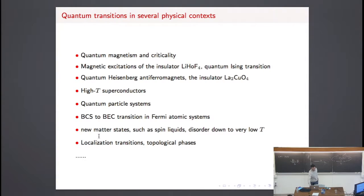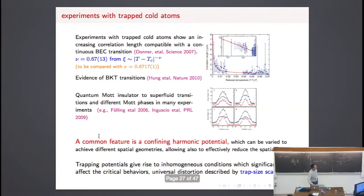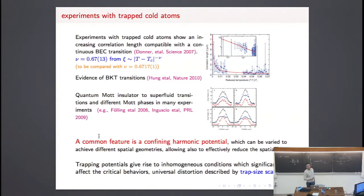This theory can be applied to many different systems which are very interesting. Just to give you some flavor of the experimental results: this is a finite-temperature transition with cold atoms, but this one is in the limit of zero temperature, where they observe the Mott phases. I will now show you some results for these transitions.